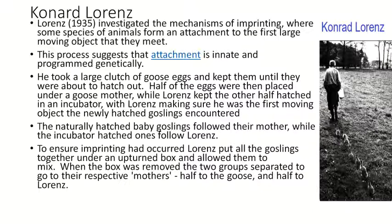Lorenz conducted an experiment. He took a large batch of goose eggs — suppose there were 100 eggs — and kept them until they were about to hatch. When they reached the hatching stage, 50 eggs were placed under the goose mother who laid them, and 50 eggs Lorenz kept in an incubator. He made sure that the 50 eggs in the incubator, when they hatched, the first thing those goslings would see would be him. So the first moving object the incubator goslings would see would be Lorenz himself, while the other 50 would see the goose mother as the first moving object.